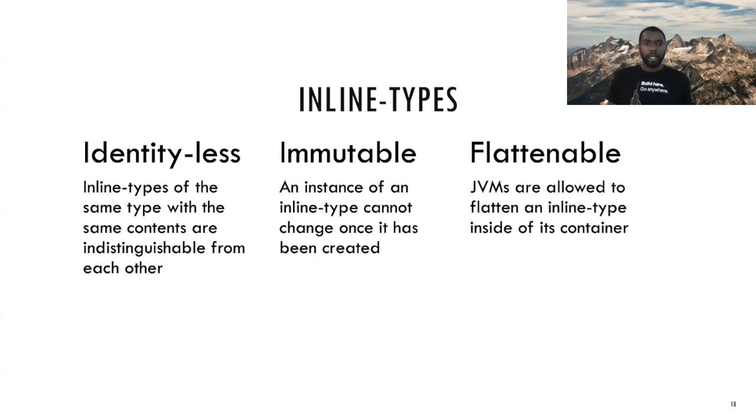As you can see, inline types have a lot of the same characteristics as primitive types. Primitive types are immutable. They don't have identity. So one way of looking at inline types is as programmable primitives. Or you can think of them as restricted classes. They work kind of like classes, but the restrictions make them more performant than classes.